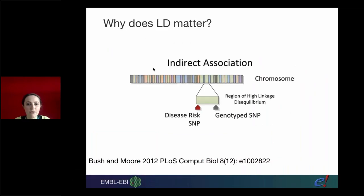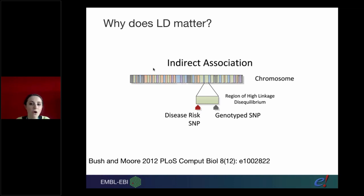So why is LD so very important? If you're looking at disease risk and you do something like a GWAS, some of the variants and loci identified by your study may actually not be the ones causing the disease - they're the ones that are in LD with the ones causing the disease. So you can get some kind of misleading data from this.